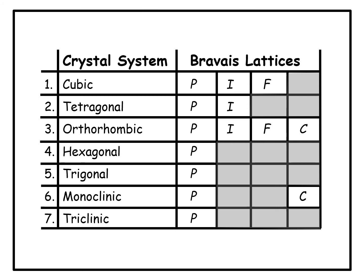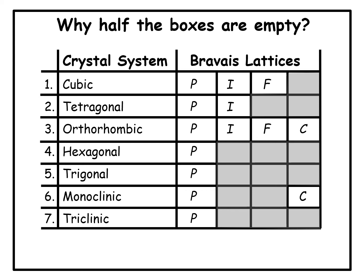One of the most interesting questions regarding this classification is: if there are 7 crystal systems and orthorhombic alone has 4 types of Bravais lattices — P, I, F, and C — why do other systems not have all 4 types? With 7 systems and 4 possibilities, there are 28 combinations, yet only 14 Bravais lattices exist — exactly half. The real central question is not why there are 14 Bravais lattices, but why half the boxes are empty.